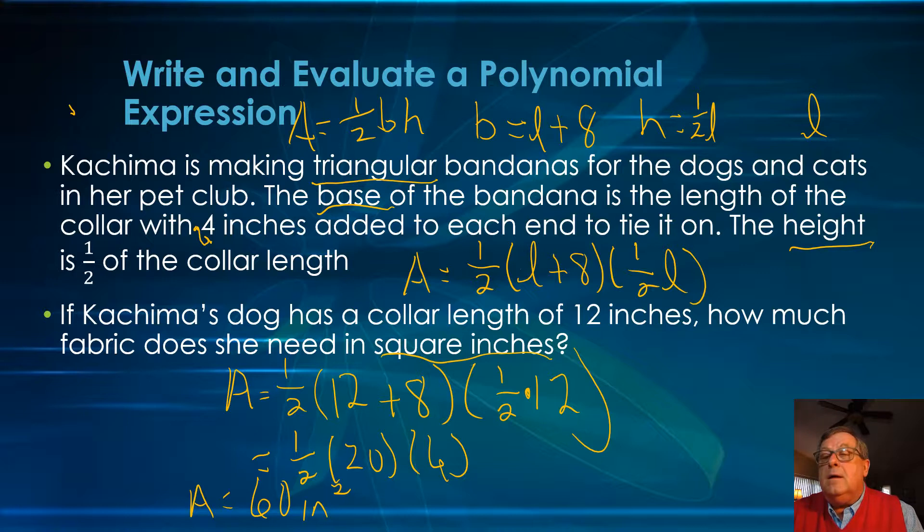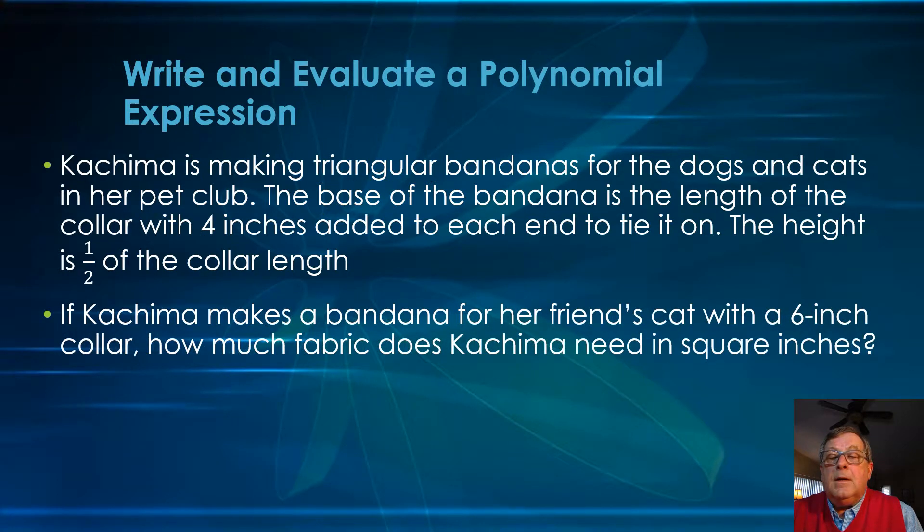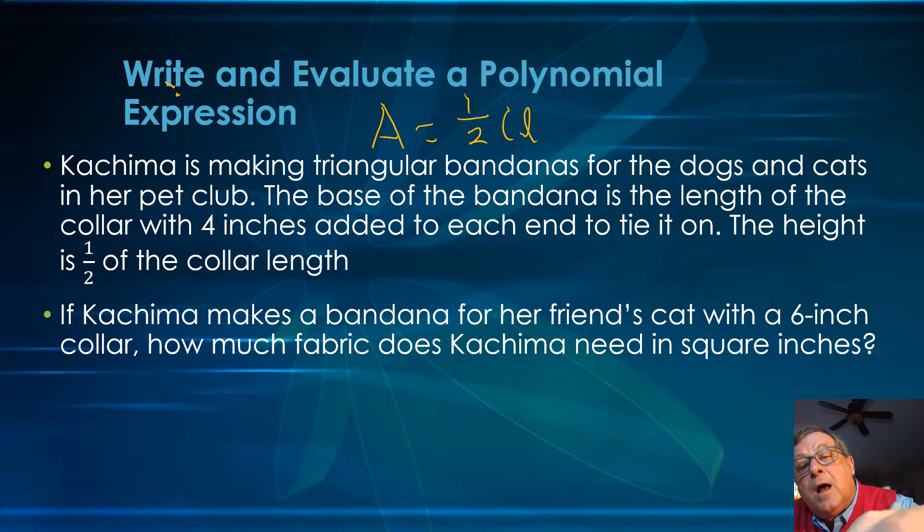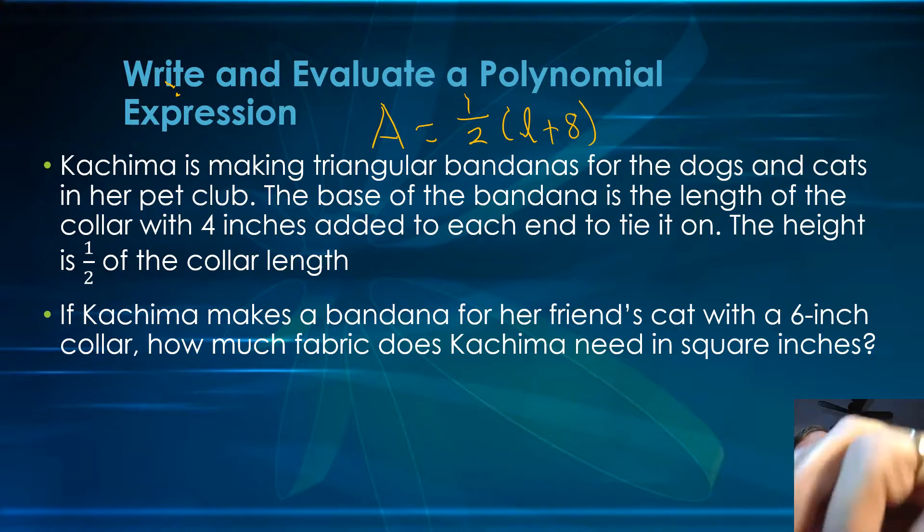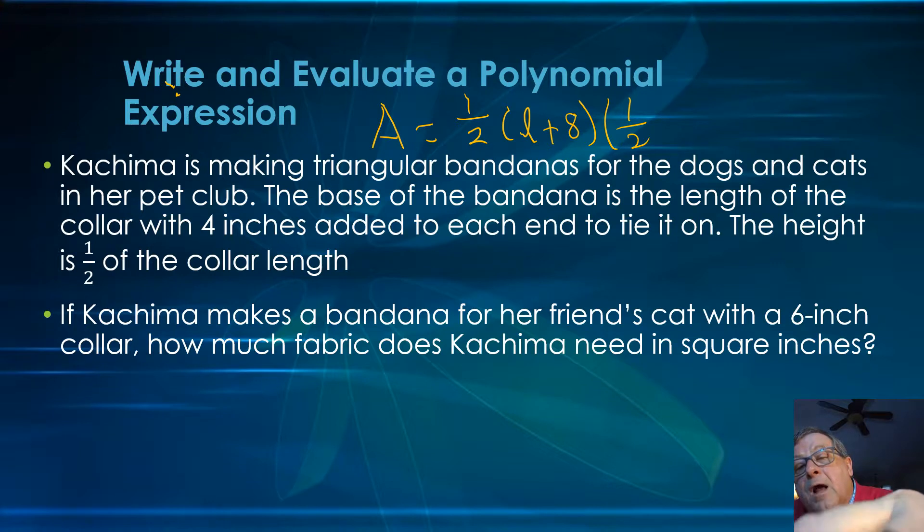I've got a feeling Kachima's going to want to do one for a cat. Sure enough, she's got one she wants to make for her friend's cat, and that's a 6-inch collar. We'd already determined that nothing has changed regarding our polynomial expression. It's one half times the base, which is the length of the collar plus 8, times the height, which is one half the length of the collar.